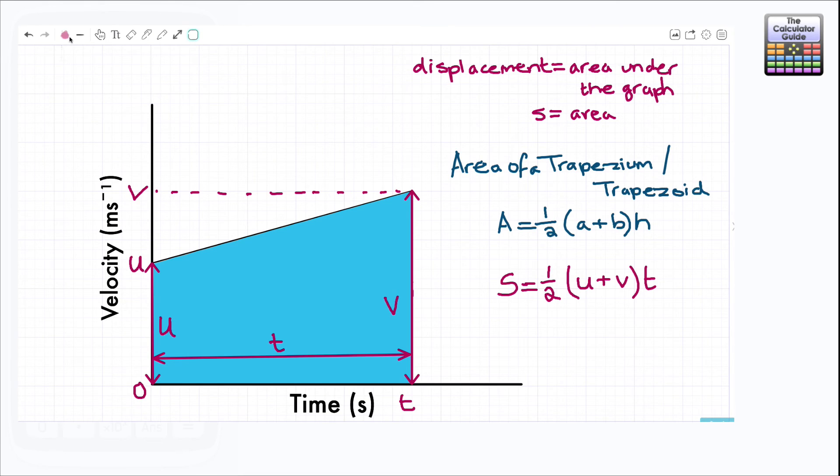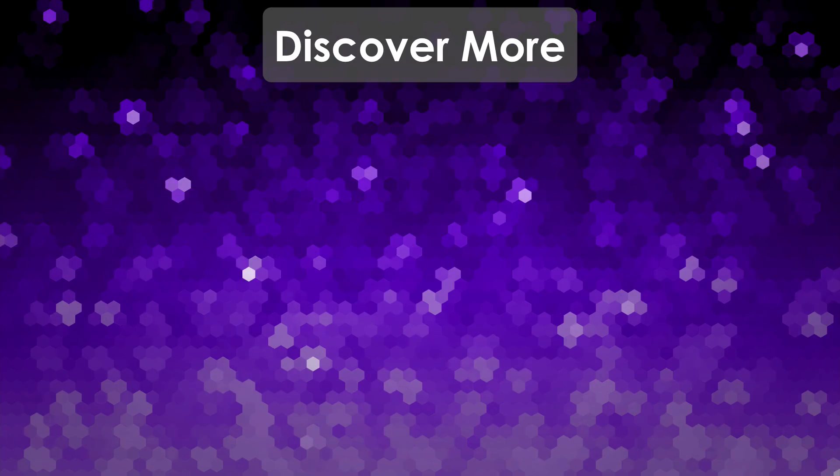And here we have another key formula, one of our kinematic equations of motion: s equals a half u plus v in brackets t. So there we go that's the formula for finding displacement when you have a change in velocity, it's equal to the area under the graph which is the formula for a trapezium or a trapezoid, so it's a variation of that and we can then use that equation to discover what displacement is when we have a difference between the initial and the final velocity.